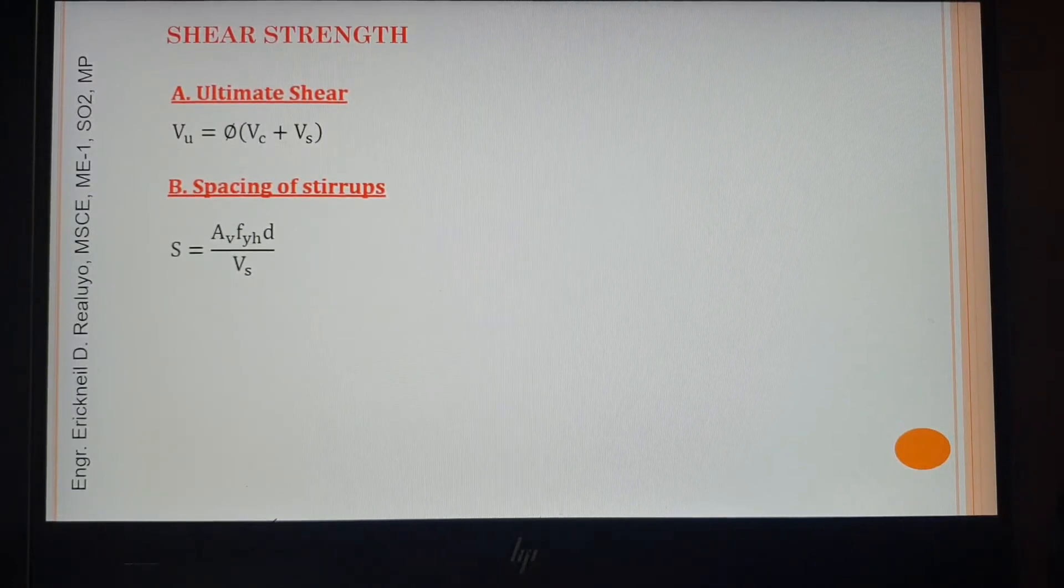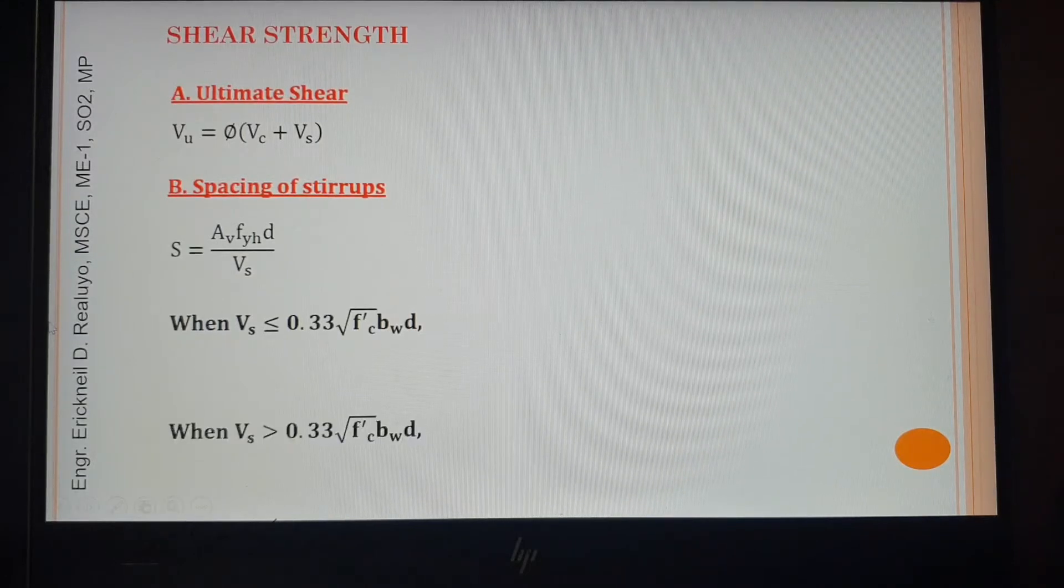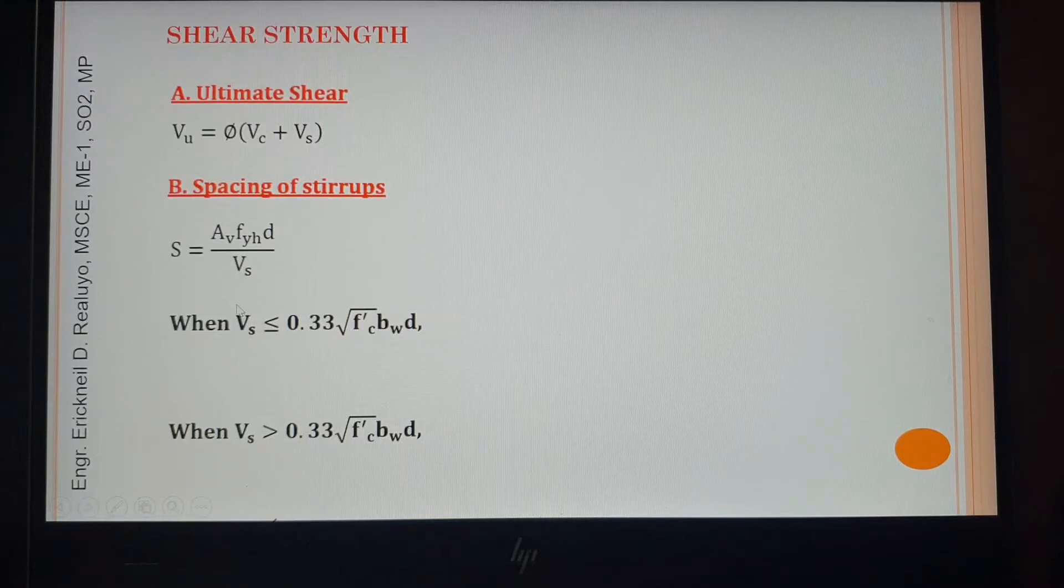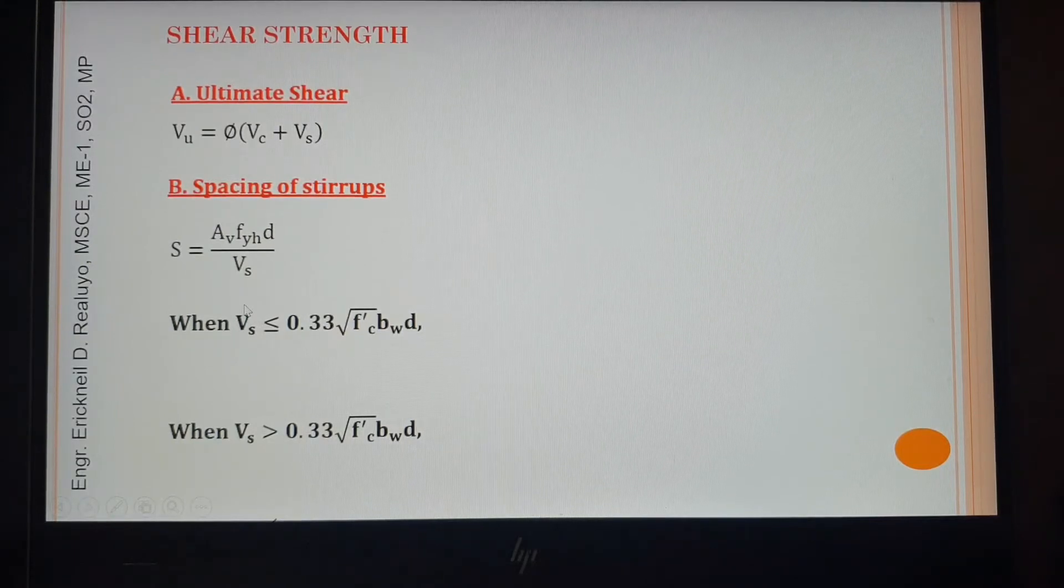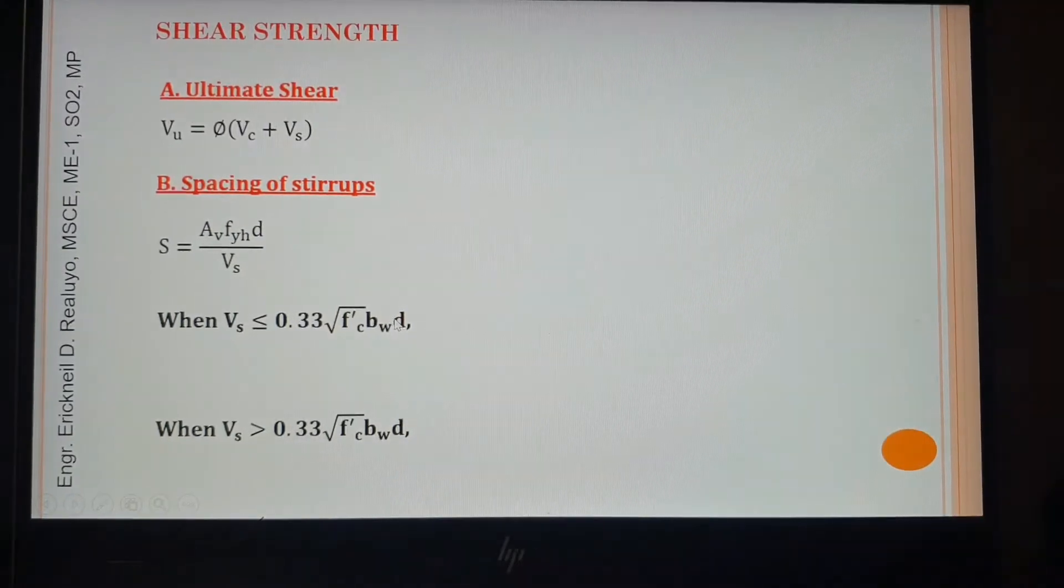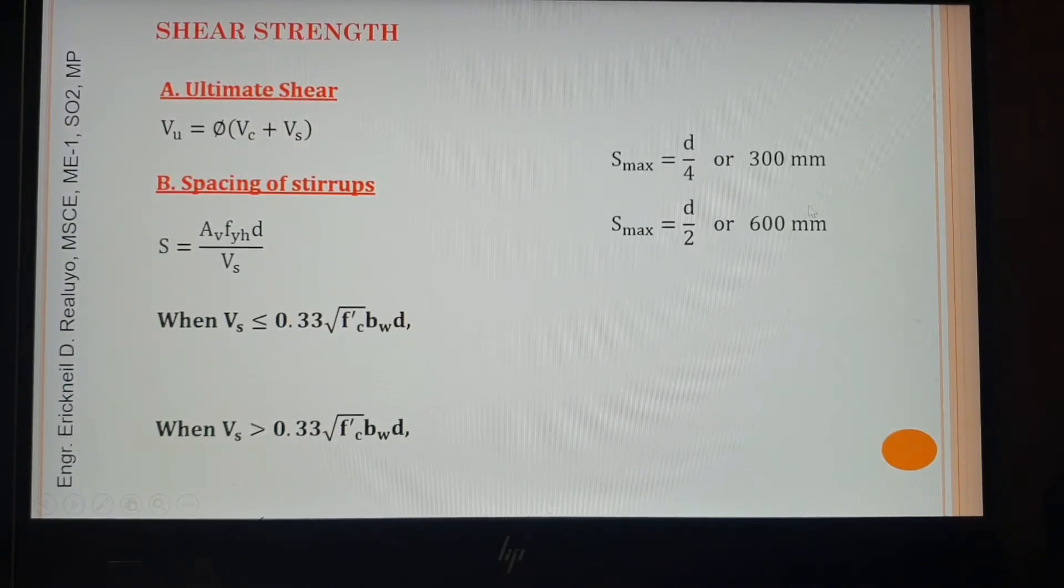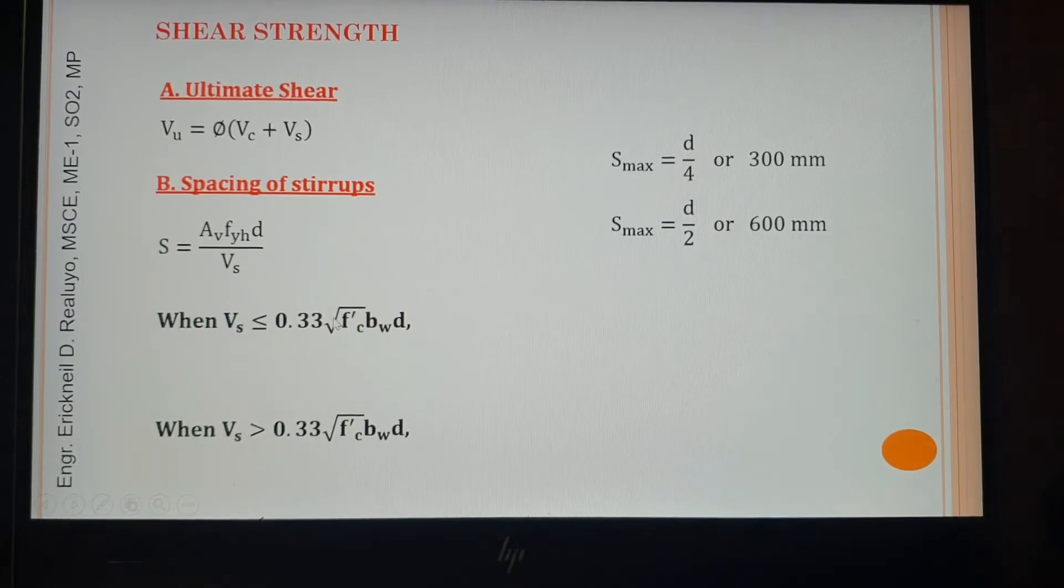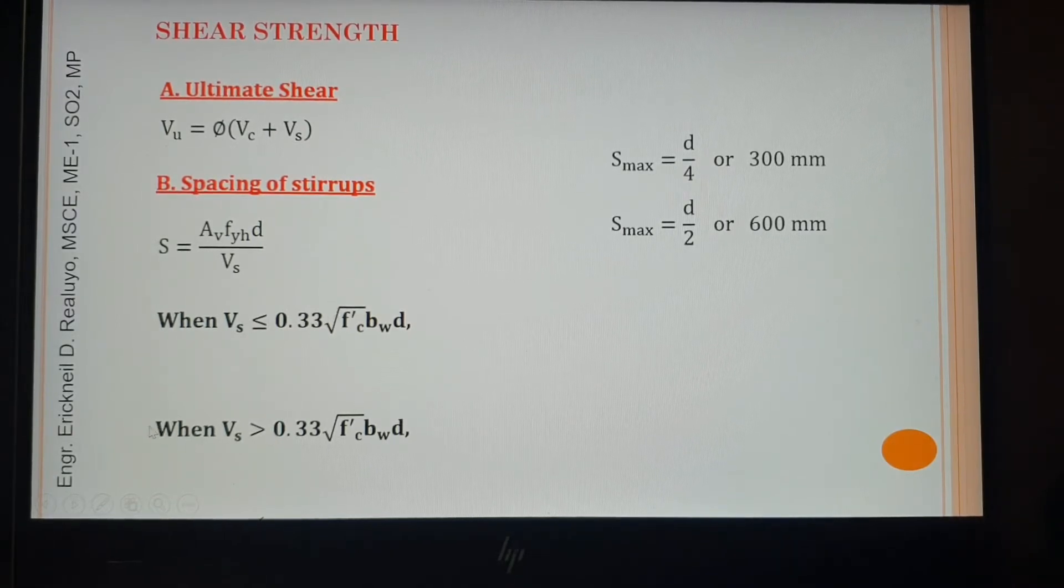To know the corresponding S max value, we will be checking, we will be comparing the value of Vs to that of 0.33 squared of F'c times b times d. So here are the S max values. Well in these two conditions, we can say that this condition is the not critical condition and this condition is the critical condition.